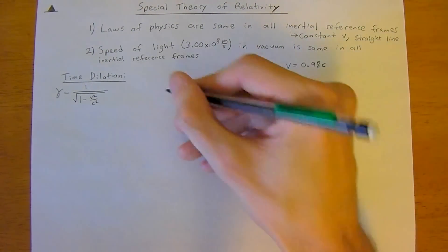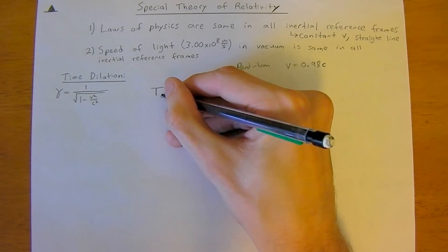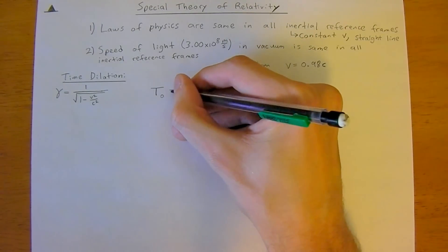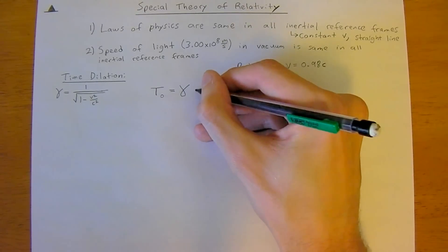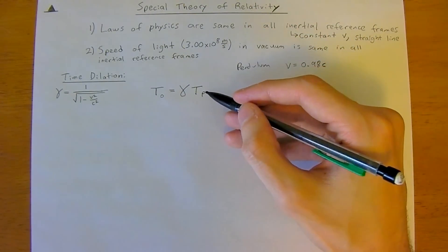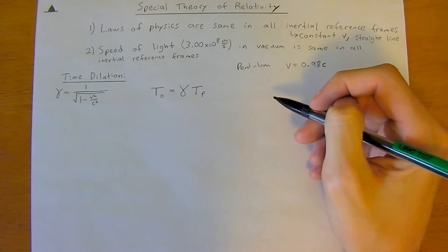And so, simply, the time observed by the observer, external observer viewing, is gamma times the proper time. The proper time is the person in the spaceship traveling at that velocity.